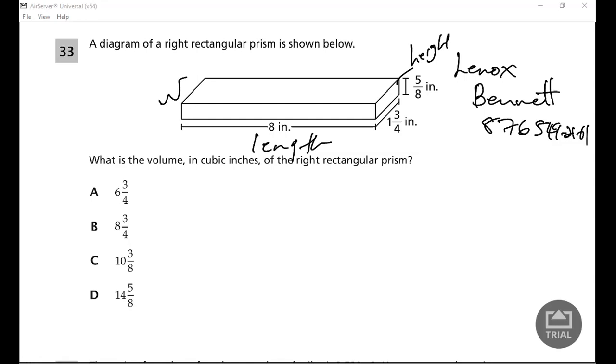So let's just multiply these three. We're gonna write it as a fraction, so it would be 8 over 1, multiplied by the height which is 5/8. We're gonna convert this 1 and 3/4 to an improper fraction.